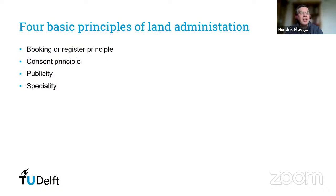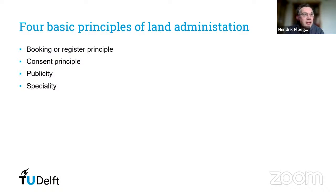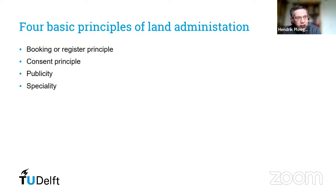The final principle is about identification: the real property should be identified — that's the 'where' question. So we have a very simplified topology with two main systems: registration of deeds and registration of title.